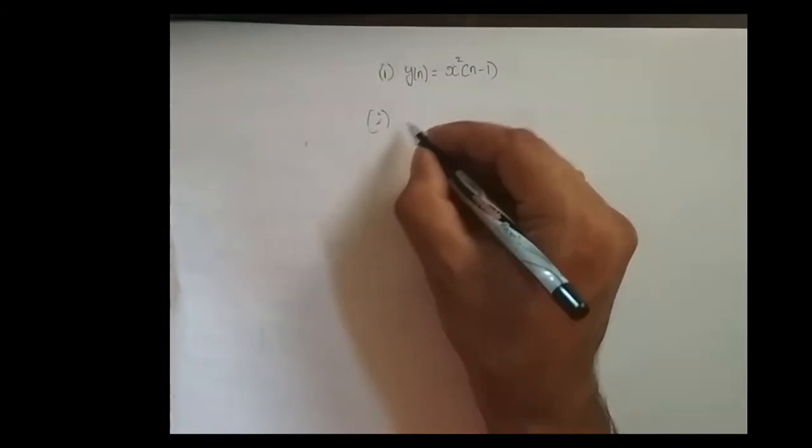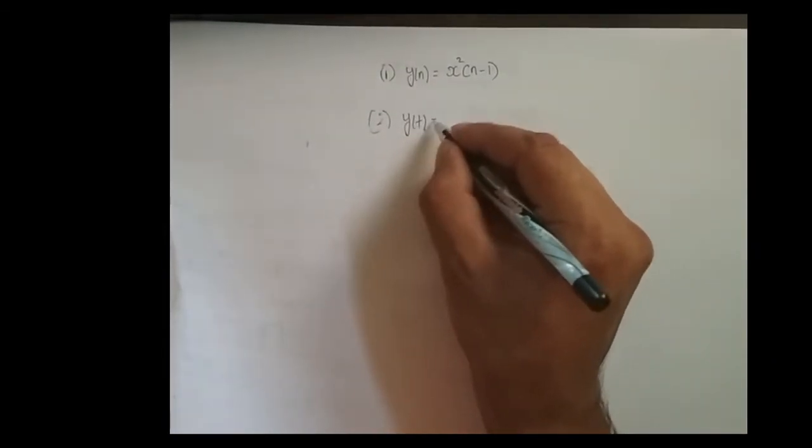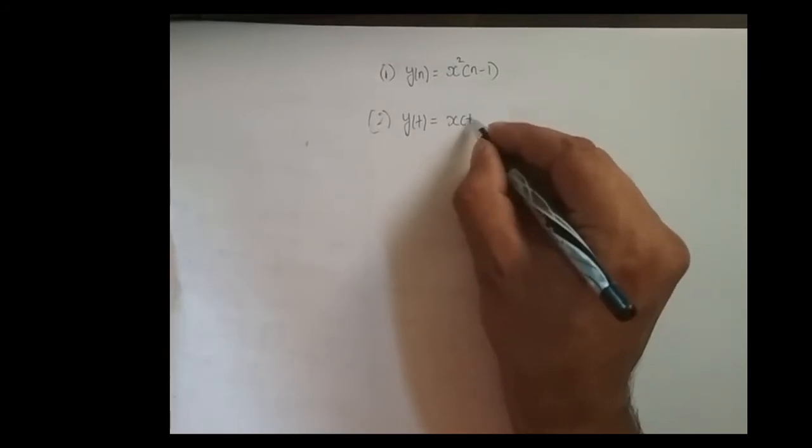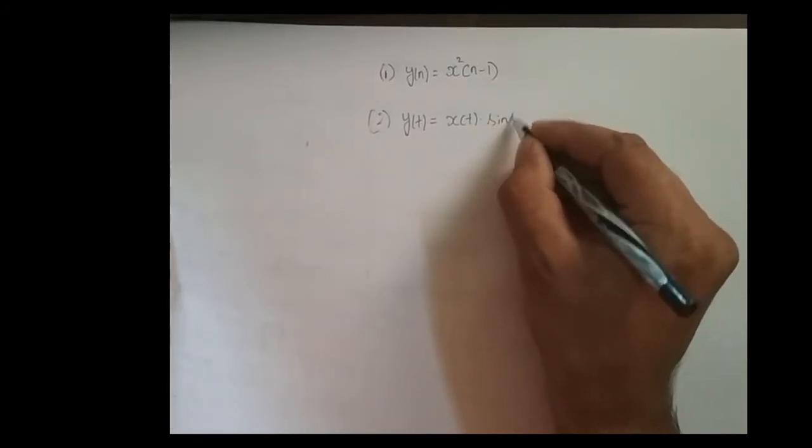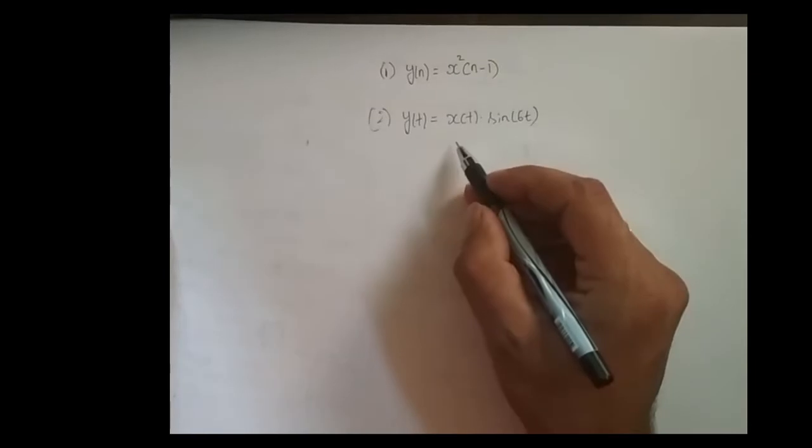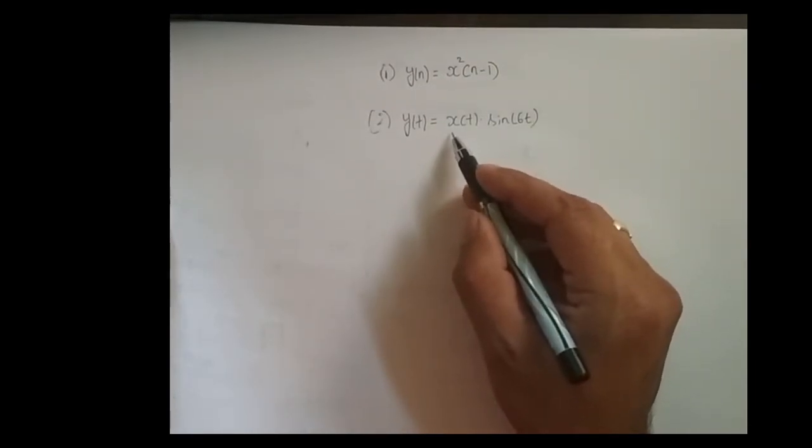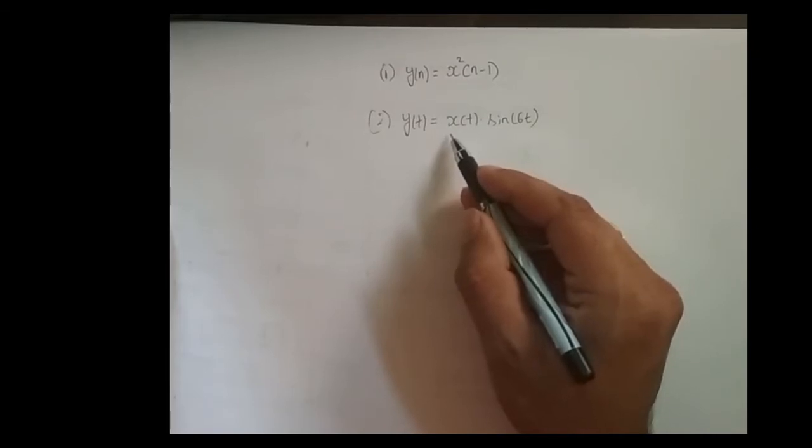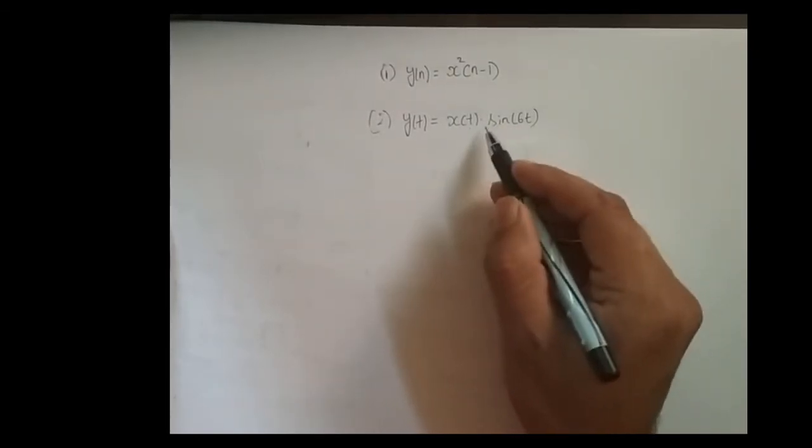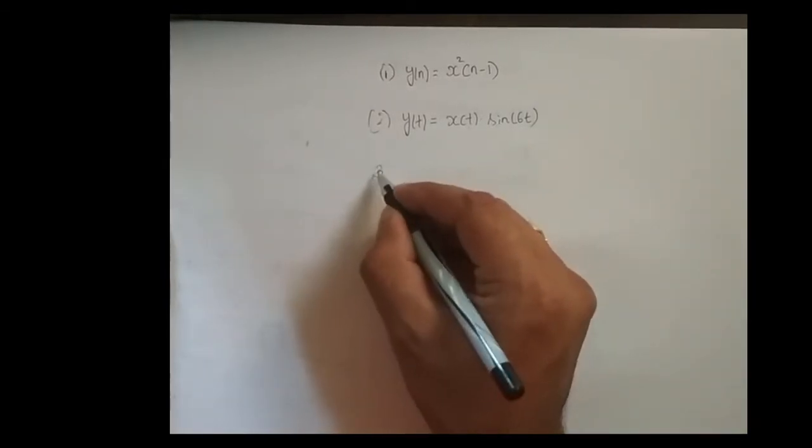Second system: y(t) = x(t)sin(6t). Here, if I feed x(t) to the system, what is the output I am getting? For whatever signal x(t) you feed, sin(6t) is getting multiplied.